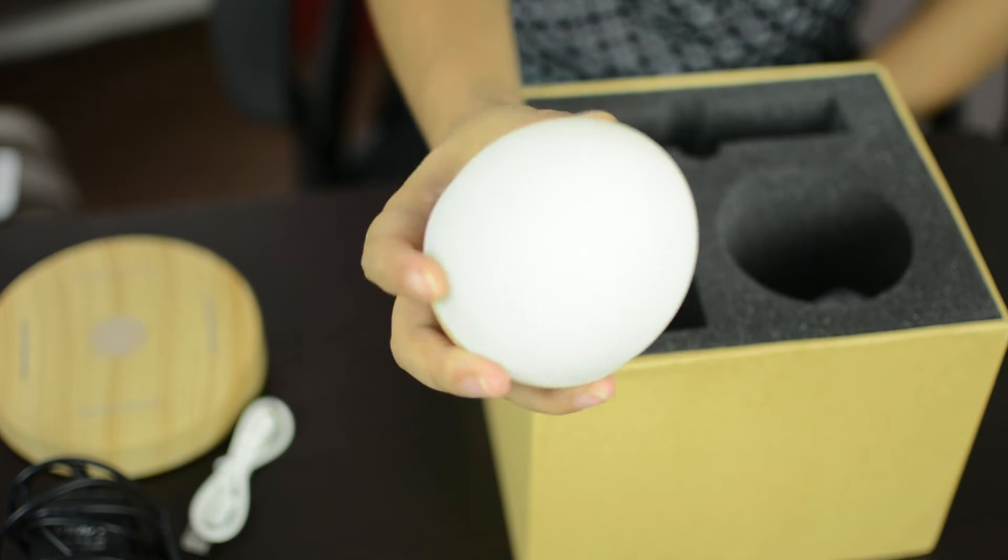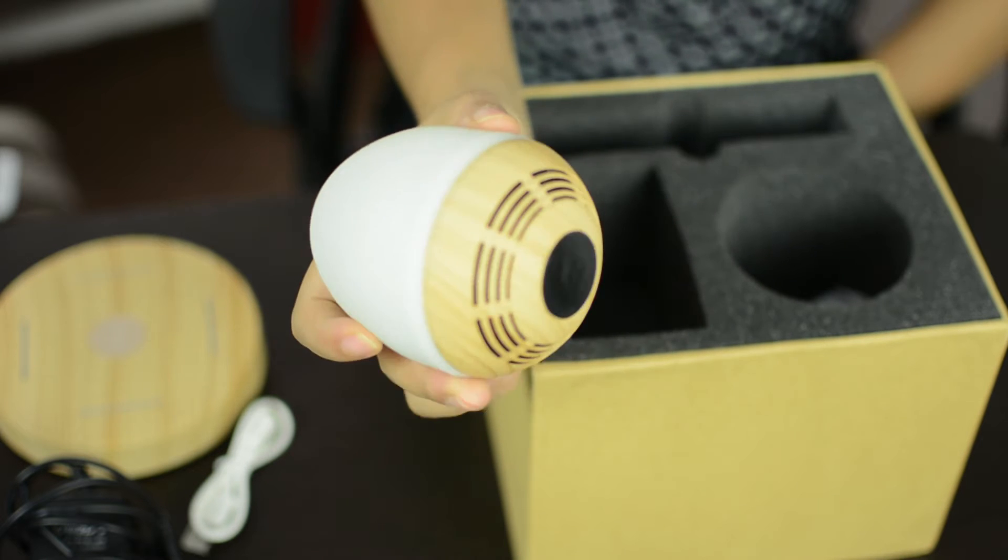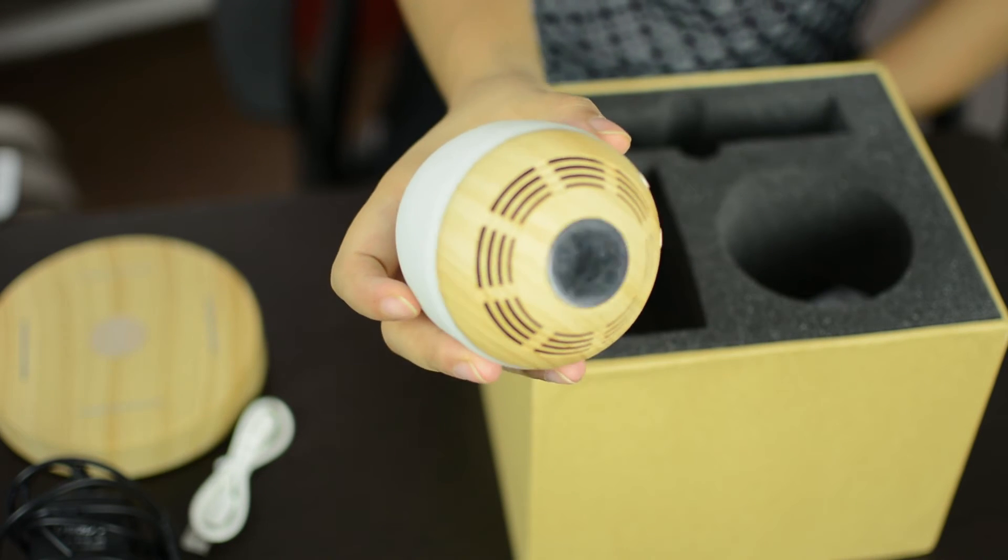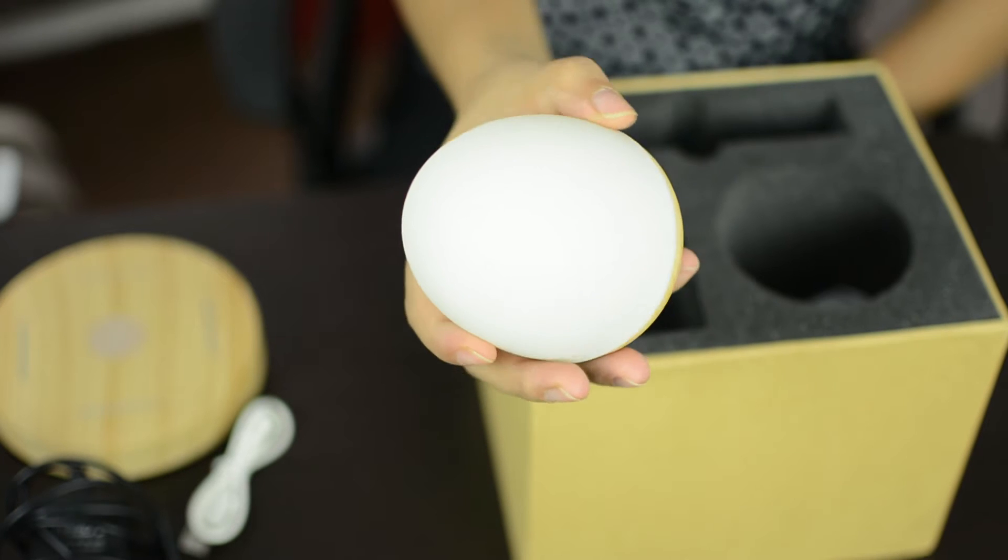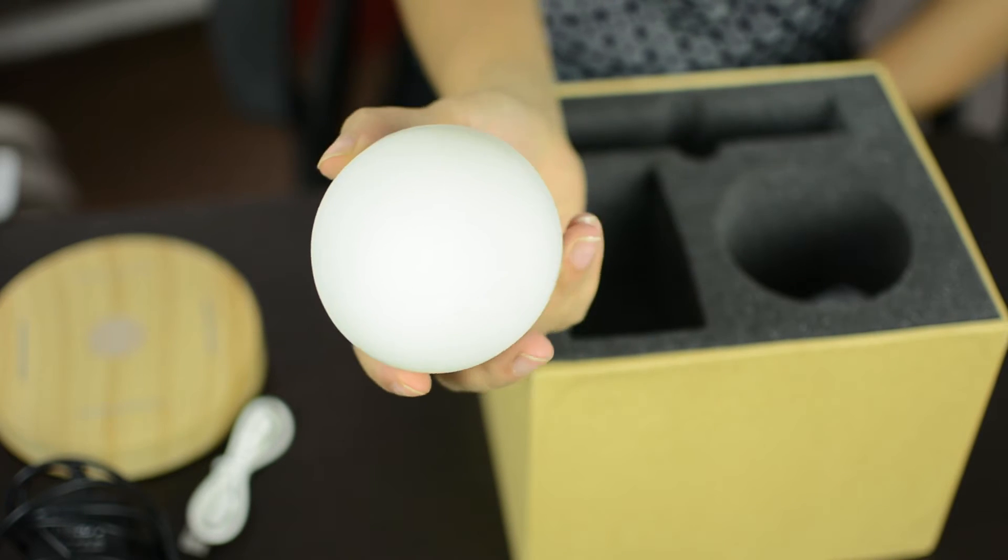It looks like an ostrich-shaped egg. The bottom looks nice and it has a wooden finish. The top is soft and rubbery, and I guess it glows.